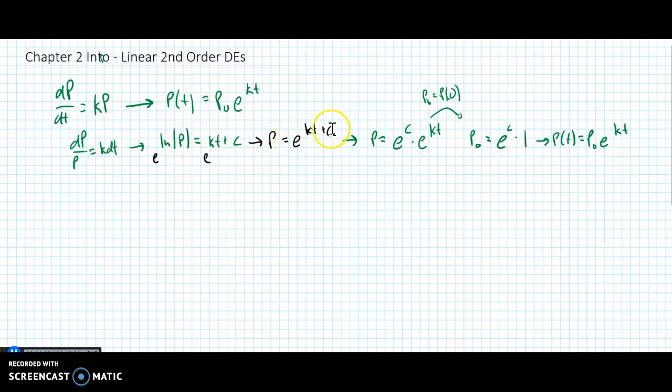We e to the, in black, on both sides there. It cancels on the left and gives me just p. From there I get e to the kt plus c. I use some exponent rules and write this as e to the c times e to the kt, recognizing that e to a constant is still just a constant. I plug in my initial conditions, p naught is p(0), which gives me e to the c is p naught. So I go back and replace it with p naught.